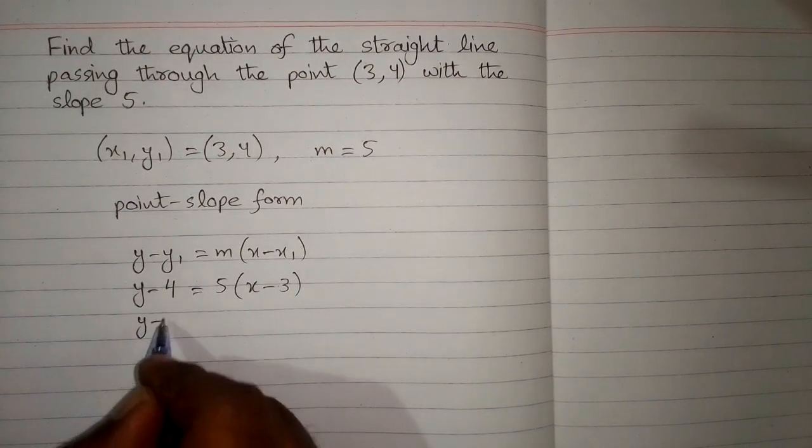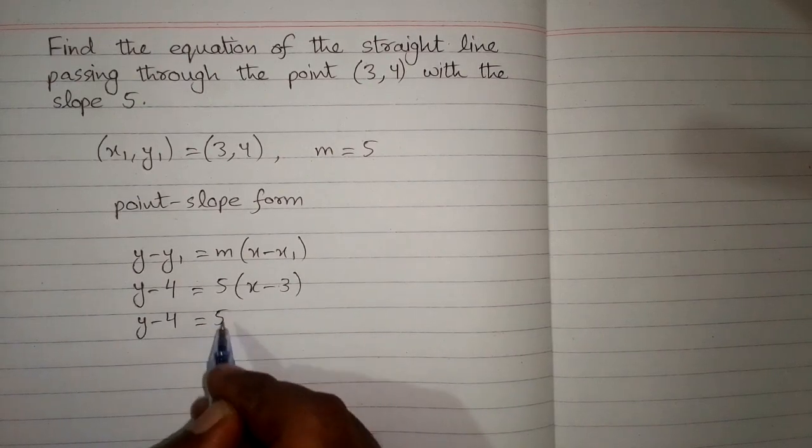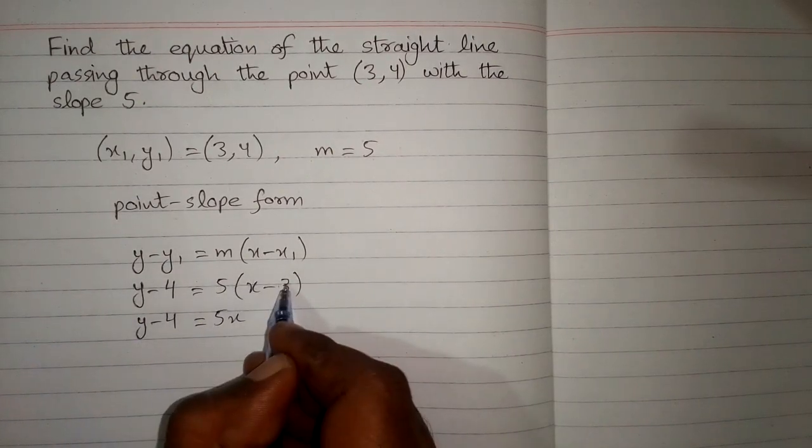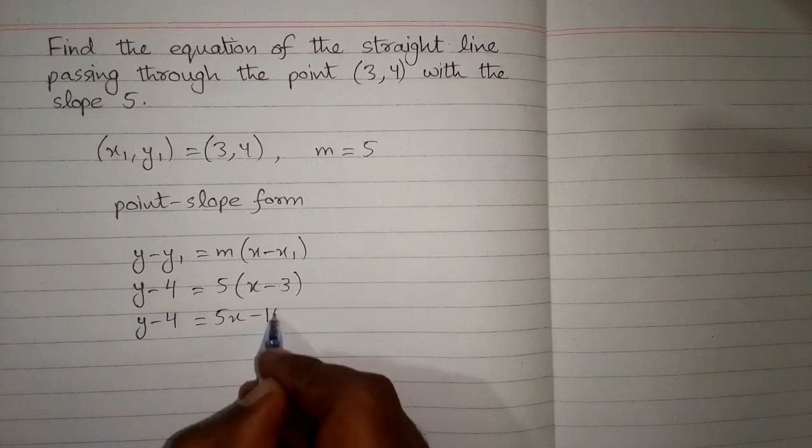Now we have y minus 4 is equal to 5 times x is 5x and 5 times minus 3 is minus 15.